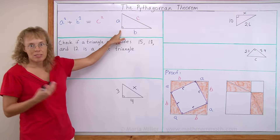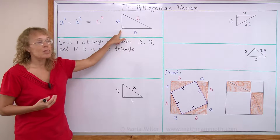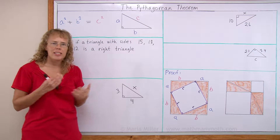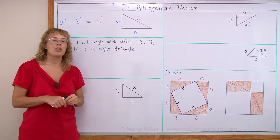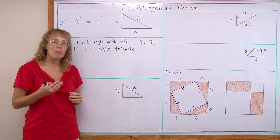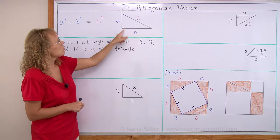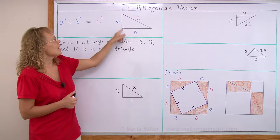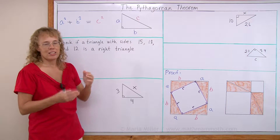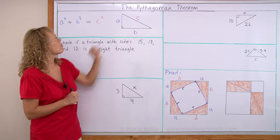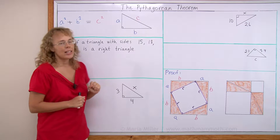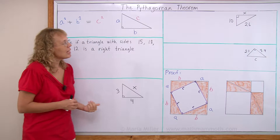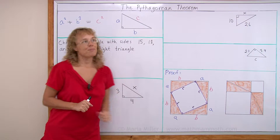In this right triangle, the side lengths are a, b, and c. C is the longest side, also called the hypotenuse. The other two sides, a and b, are not the longest sides — they are always at the right angle. Let's study how we can use the theorem first, and then at the end I will prove it.